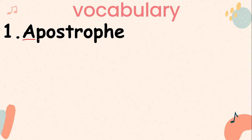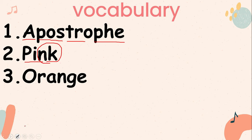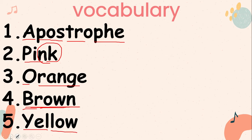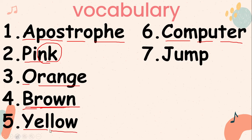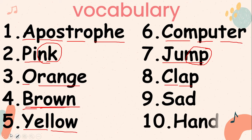Number 1: apostrophe. Number 2: pink. Number 3: orange. Number 4: brown. Number 5: yellow. Number 6: computer. Number 7: jump — the letters M and P. Number 8: clap. Number 9: sad. And number 10: hand. Very good, Grade 3.